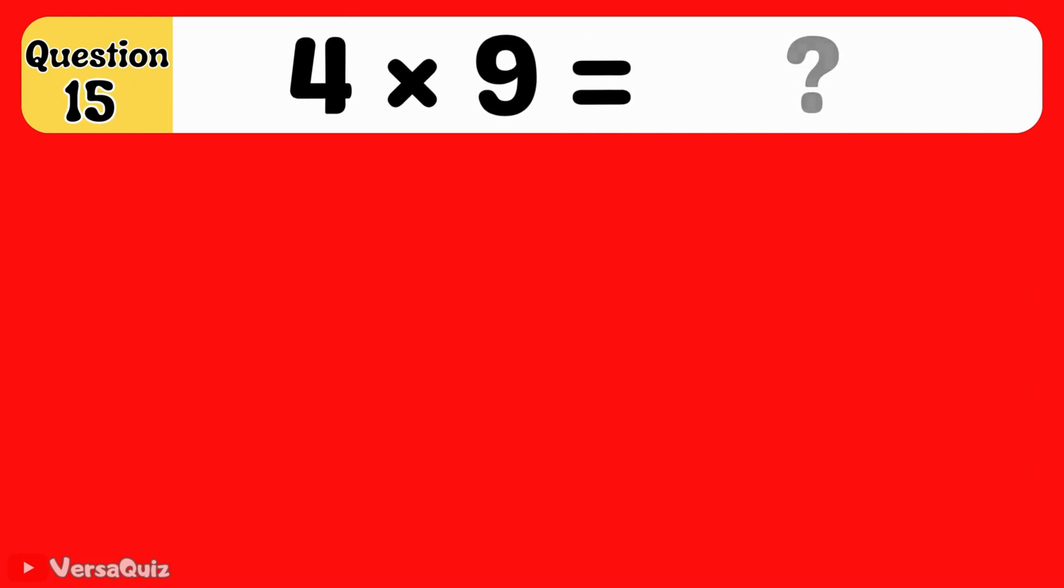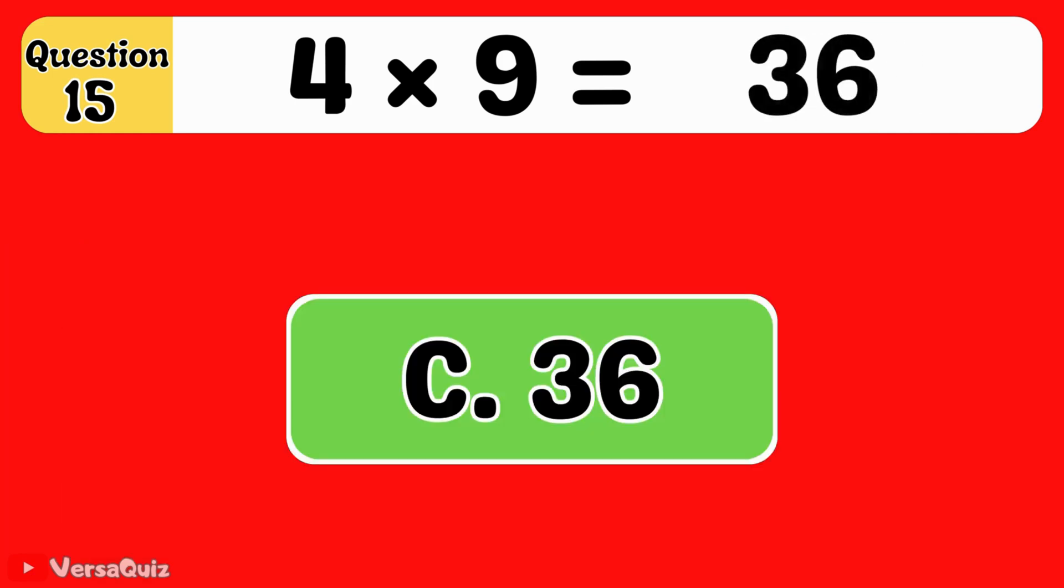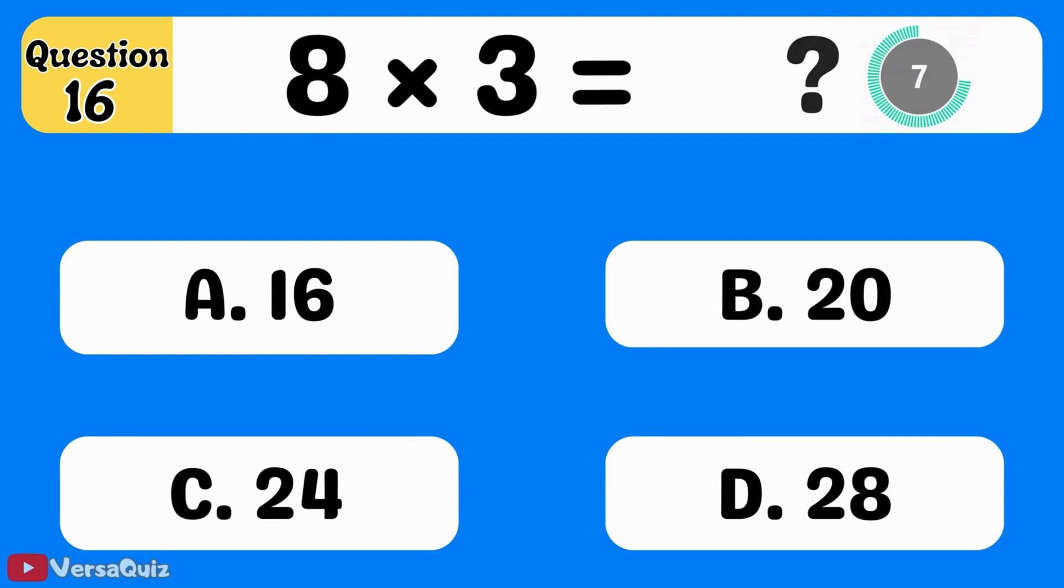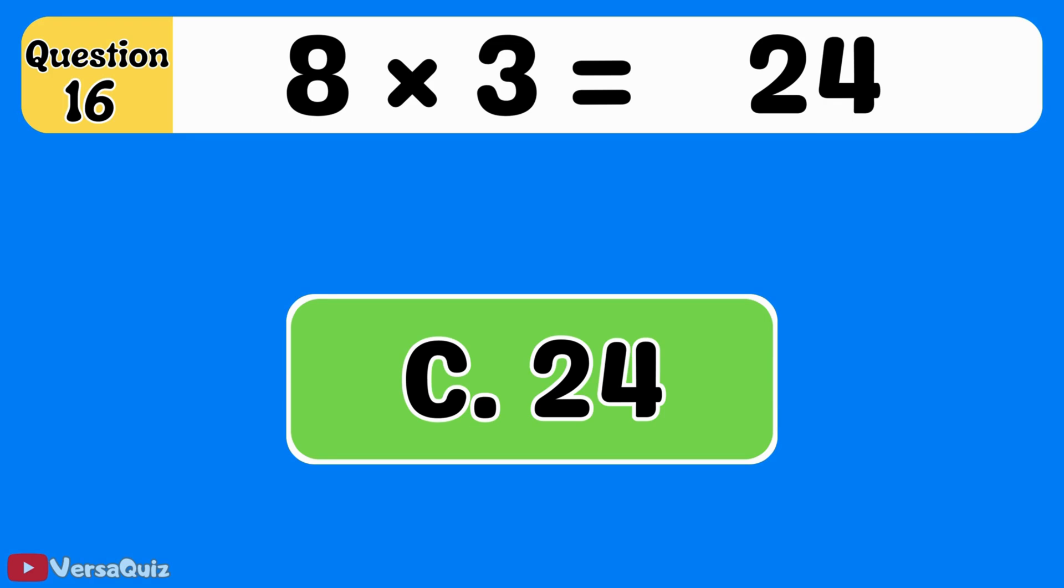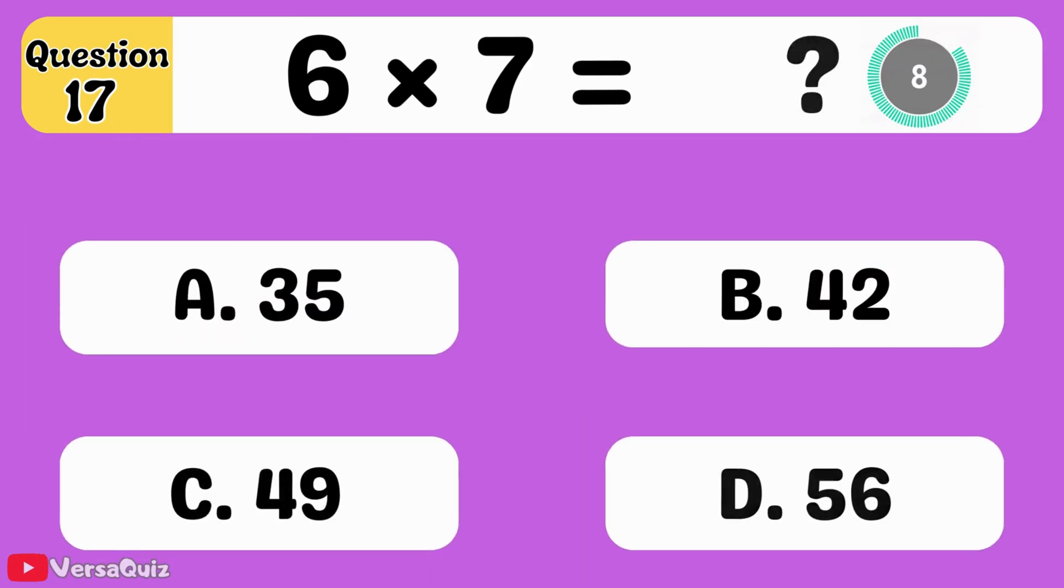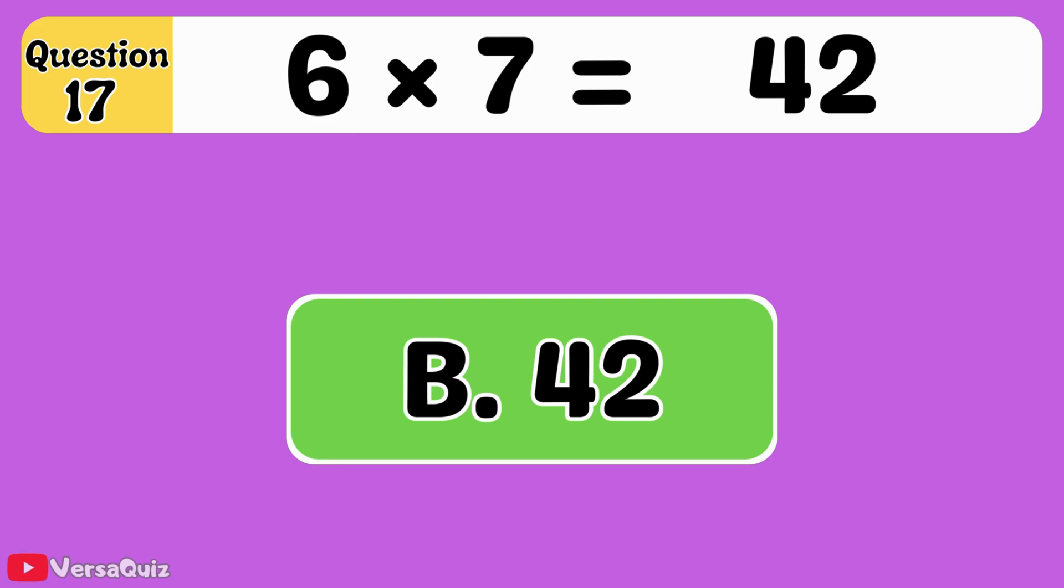4 times 9 is equal to 36. 36. 4 times 9 equals 36. What is 8 times 3? 24. 8 times 3 equals 24. What is 6 times 7? 42. 6 times 7 equals 42.